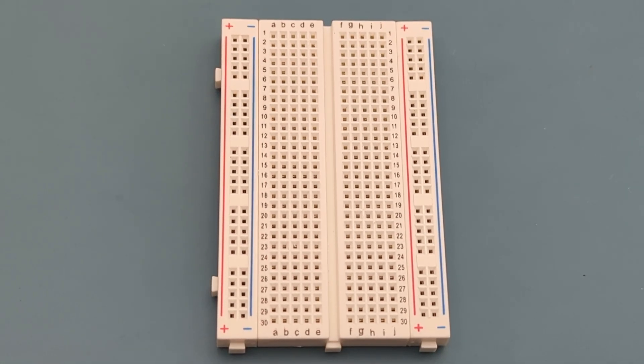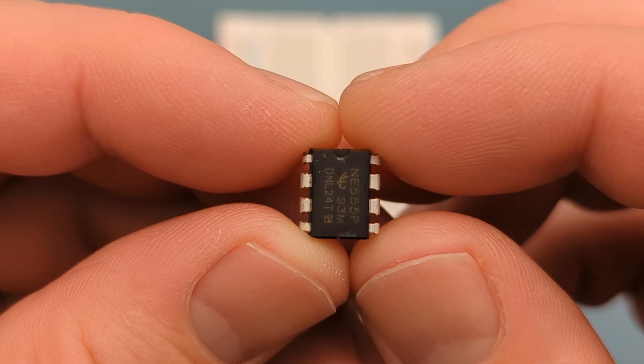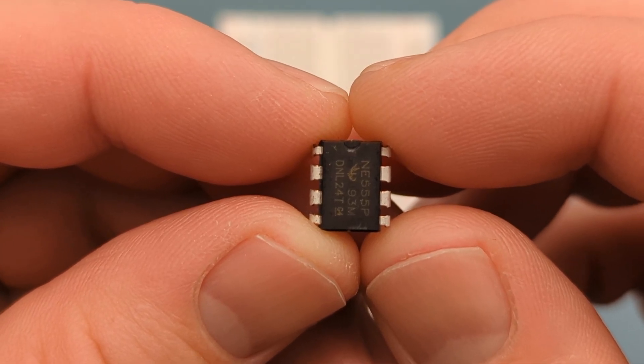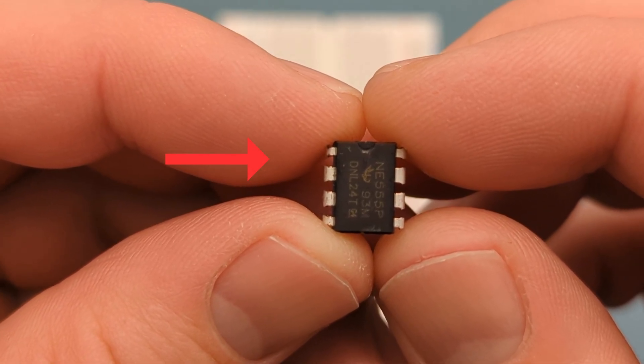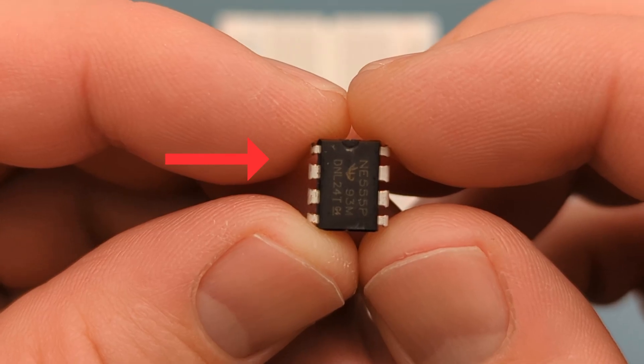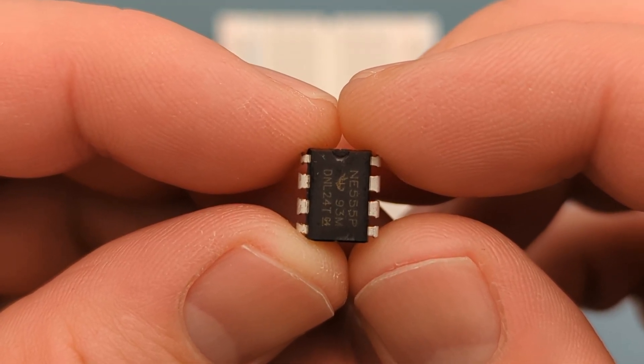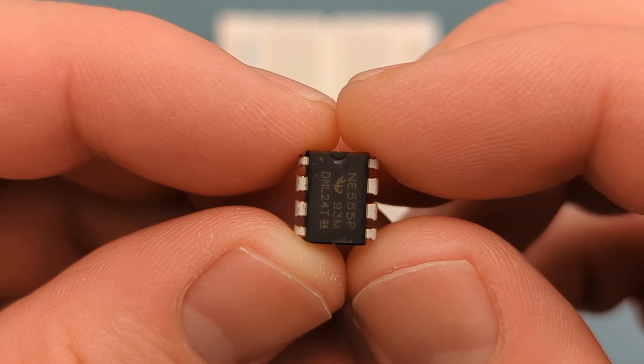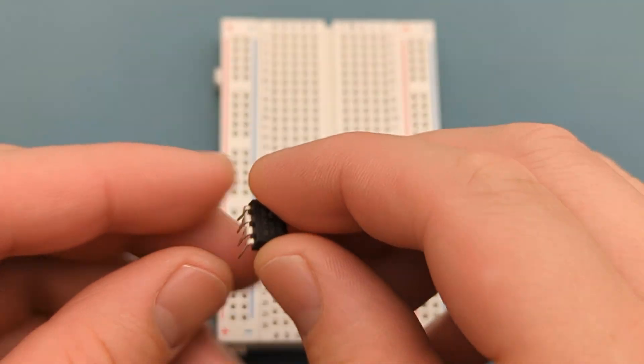Let's set up the circuit step-by-step. Begin by positioning the 555 timer IC on the breadboard. The pins are numbered counterclockwise, starting from the top left corner. Refer to the circuit diagram if you have questions about the circuit connections. Insert the 555 timer in the middle of the breadboard.